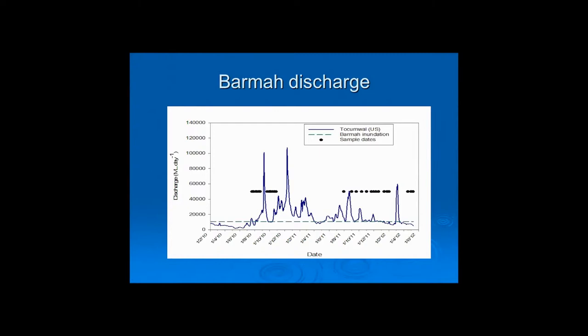This is a hydrograph of the study period. The black dots indicate when we were sampling. The horizontal line is the point at which the Barmah Forest receives flood waters, and this is the hydrograph of Tokenwall. We began sampling just as river levels began to rise after the Millennium drought — essentially there'd been no floodplain connection for five years. We sampled the initial floodplain inundation event, then began sampling again in August 2011 through to May 2012, covering a series of high and low flow events, comparing periods of disconnection with periods when the floodplain was connected to the main river channel.